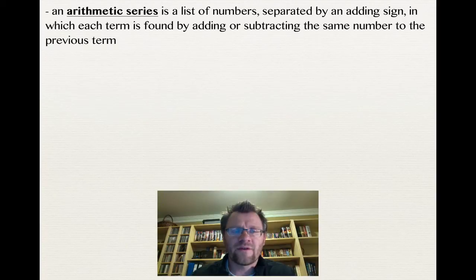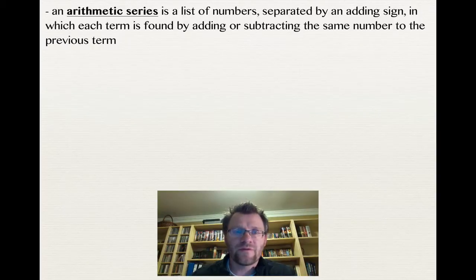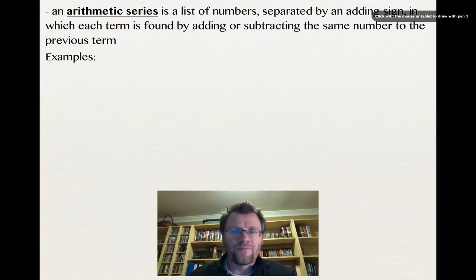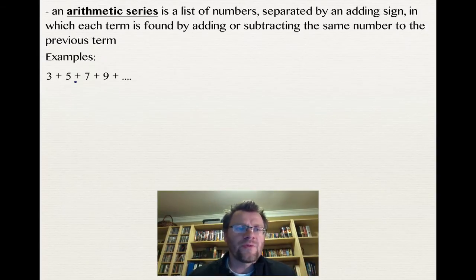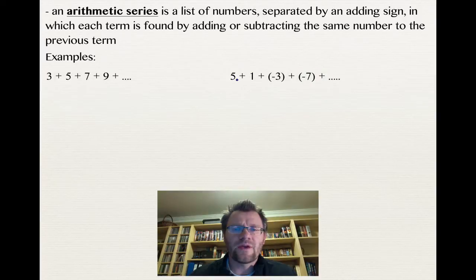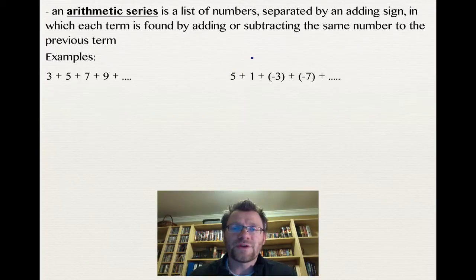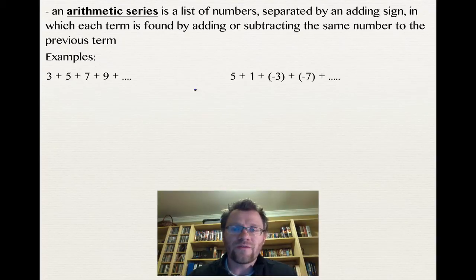An arithmetic series is a list of numbers separated by an adding sign, in which each term is found by adding or subtracting the same number to the previous term. For example, 3 + 5 + 7 + 9, which is going up by 2 each time. In another case, 5 + 1 + (−3) + (−7), where the common difference is −4. They're quite similar to arithmetic sequences, except instead of being separated by commas, they're an adding question.